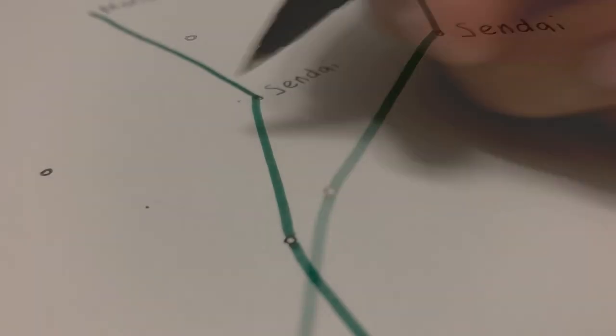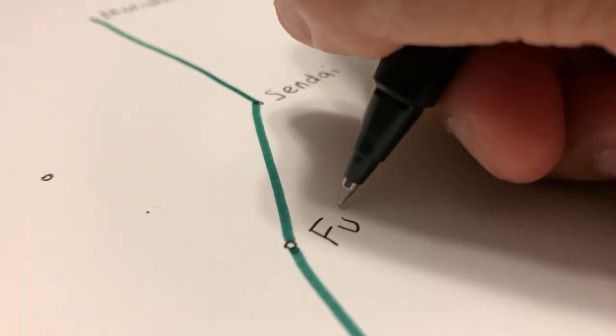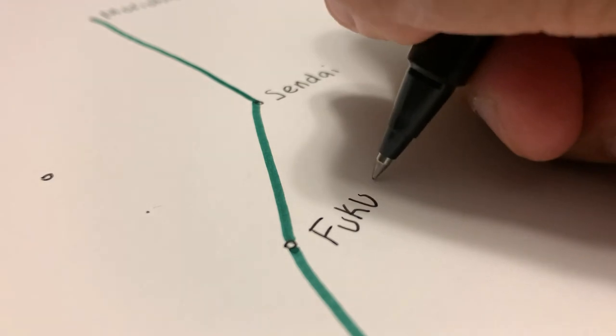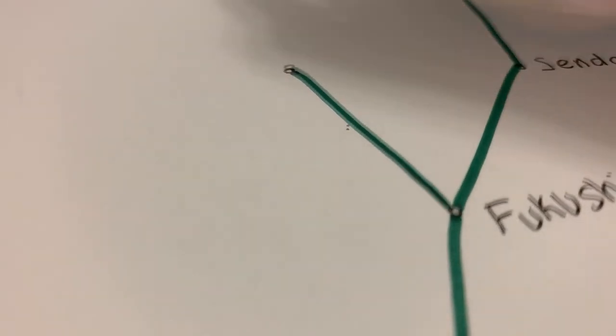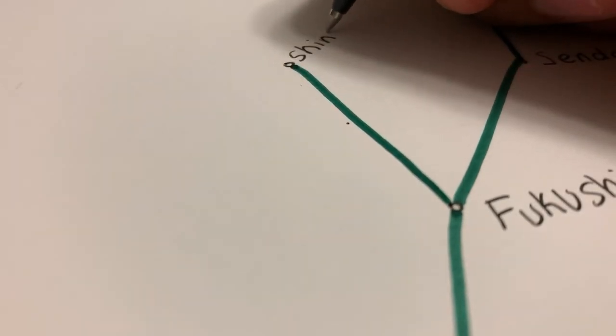In July of 1992, the first stage of the Yamagata Shinkansen opened between Tokyo and Fukushima. And later, in 1999, the line was further extended to Shinjo in the prefecture of Yamagata.